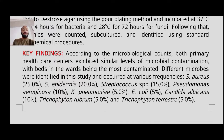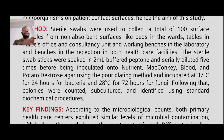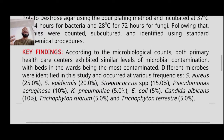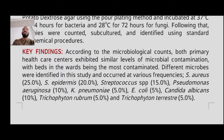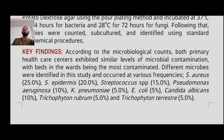Now we go down to the key findings. In this case there were no raw counts included in the abstract — if I included counts for about 100 samples, it would be bulky and confusing. Instead, according to the microbiological count, both facilities exhibited similar levels of microbial contamination. If your reader is interested, they can go into the main work to find the numbers and tables. Don't pack numbers into your abstract.